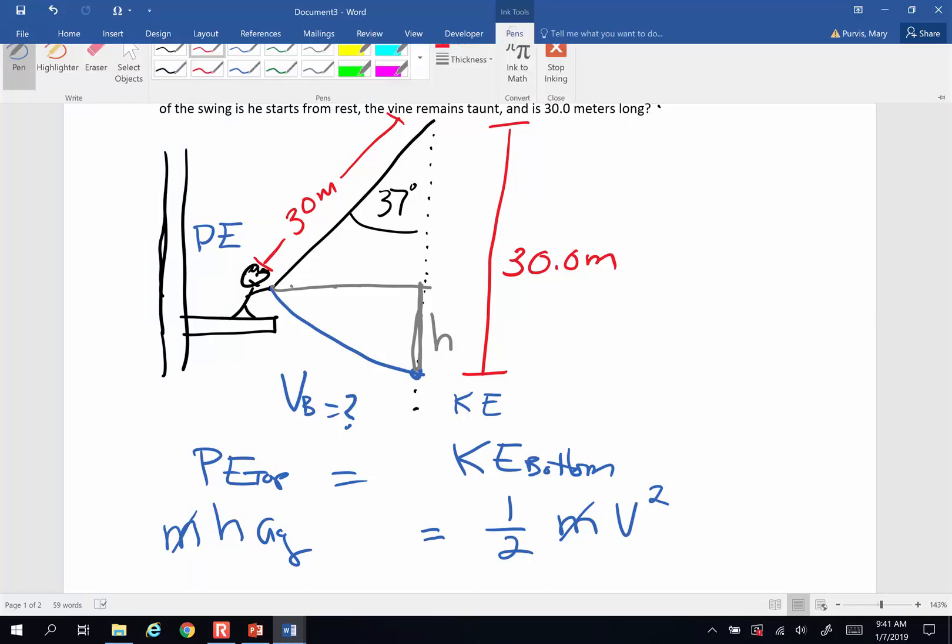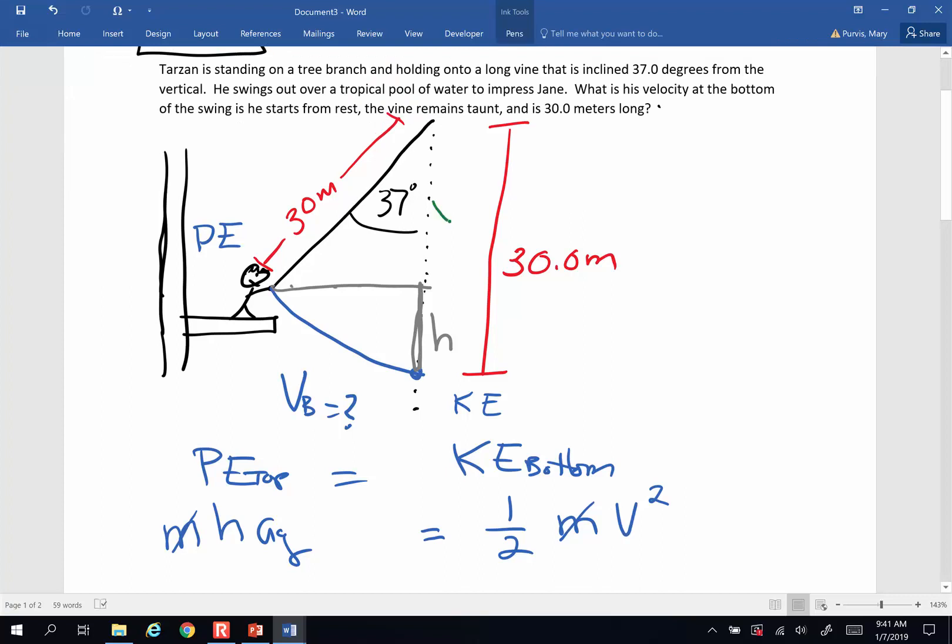If I can find side x, do you see this triangle? I'm going to outline it in green. If you see this triangle, if I know the hypotenuse is 30, I know this angle is 37, I can solve for x. And once I have x, I'm going to be able to say 30 meters minus x will be the change in height h that I need. So how am I going to go about finding x?